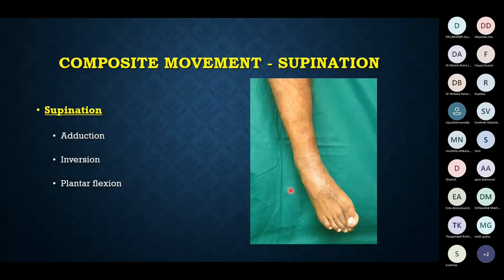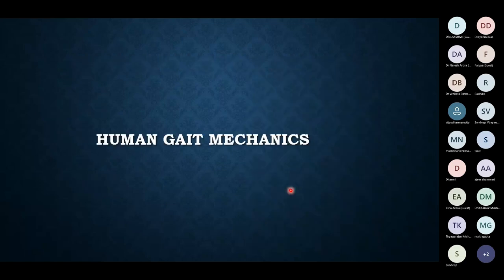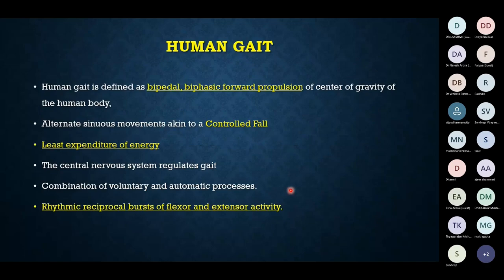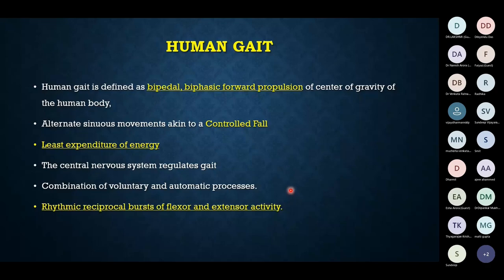Pronation consists of abduction, eversion, and dorsiflexion, whereas supination consists of adduction, inversion, and plantar flexion. Gait is defined as biphasic — a stance phase forming about 60% of gait and a swing phase forming about 40%. Humans are the only obligate bipedal locomotors; all other animals including chimpanzees are actually quadrupeds.